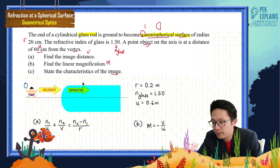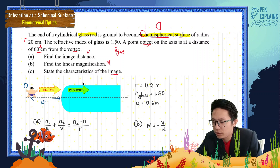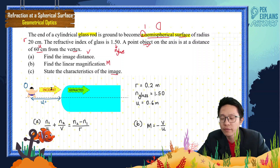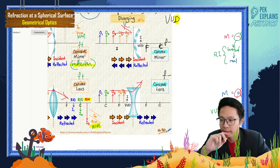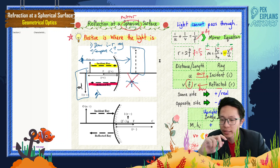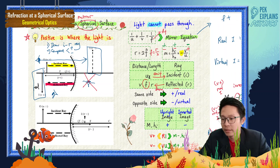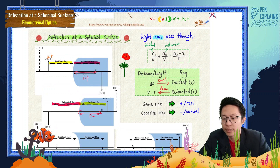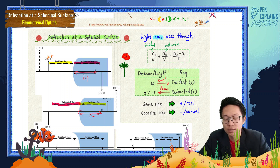Let me revisit the sign convention for refraction at a spherical surface. Object distance is always compared with the incident ray — if same side, it's positive; if opposite side, it's negative. The rest, like image distance and radius, are all compared with the refracted ray. Same side as the refracted ray means positive; opposite side means negative.